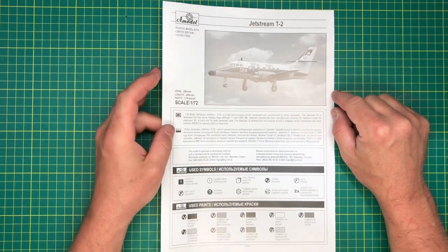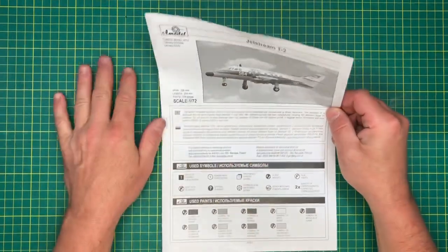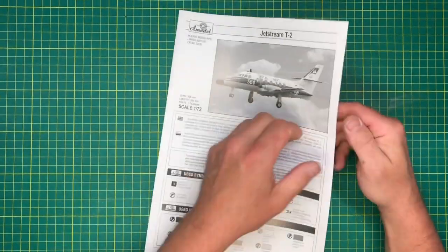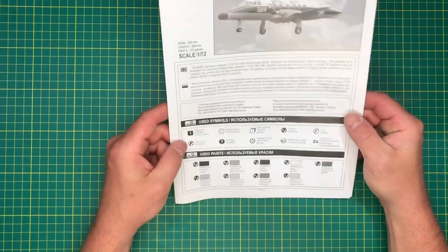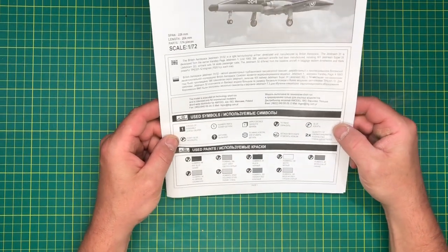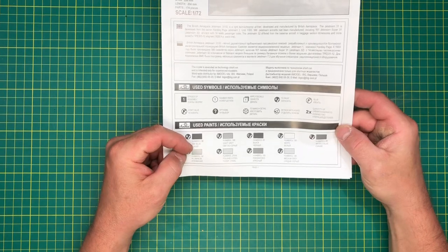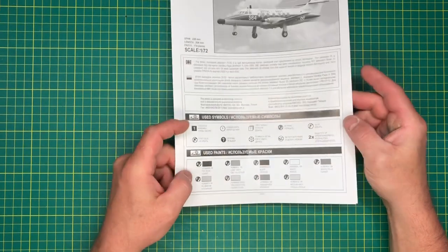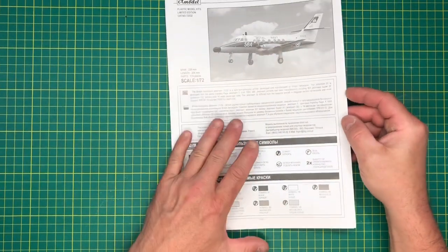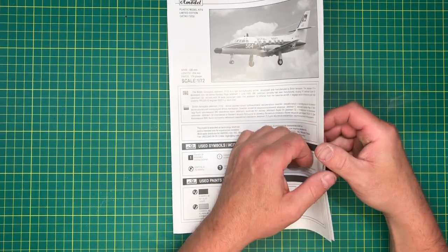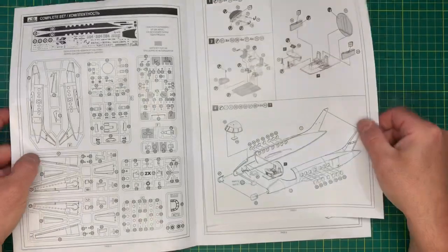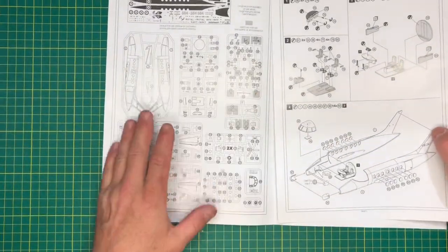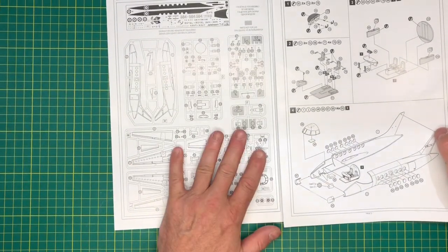So we'll start with the instructions. Fold-out glossy-ish instructions. On here we've got callouts in Humbrol, which is fair enough, isn't it? Black and white instructions. We do have a sprue map, which is always good to see.